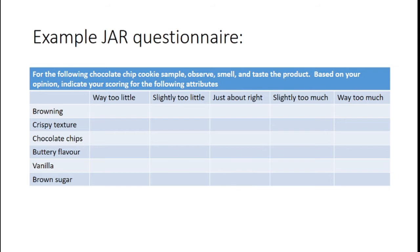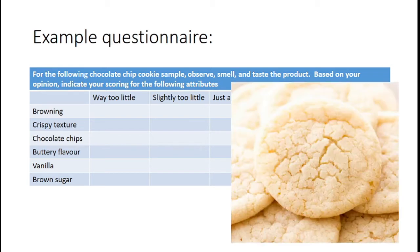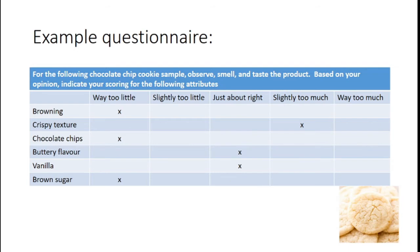Let's walk through an example. Say we're at a cookie factory developing chocolate chip cookies. For prototype number one, the results come back: not brown enough, a little too crispy, way too little chocolate chips, just about right on buttery flavor and vanilla, but not enough brown sugar. As a product developer this is really useful — I can act on collective results, not just one person's.